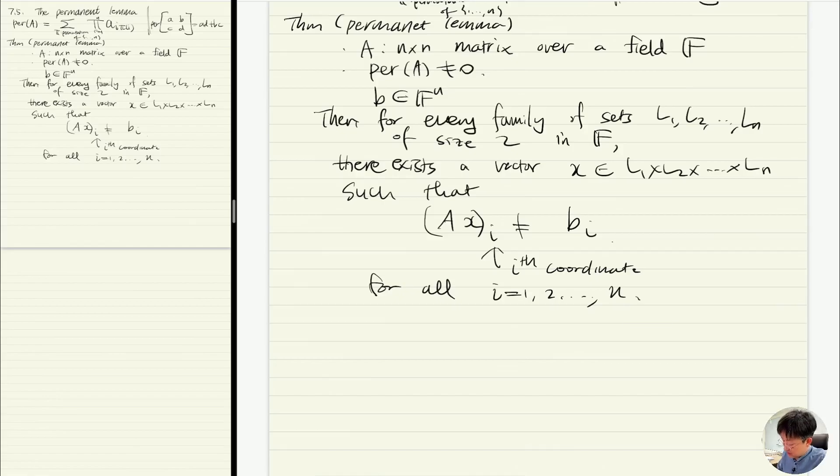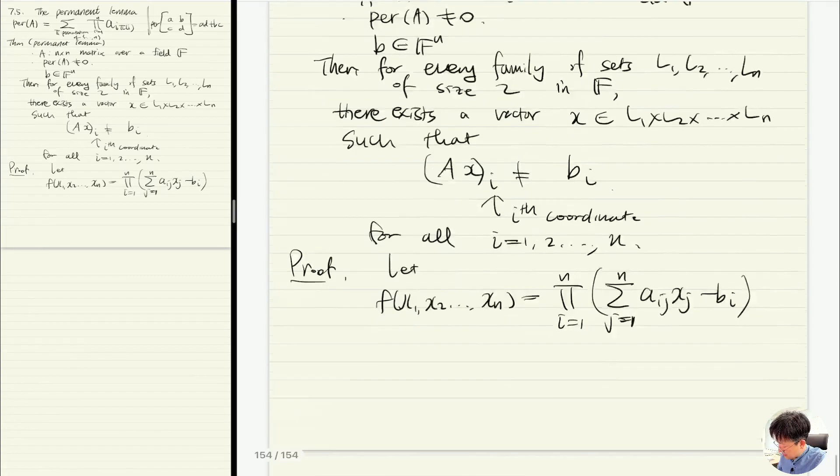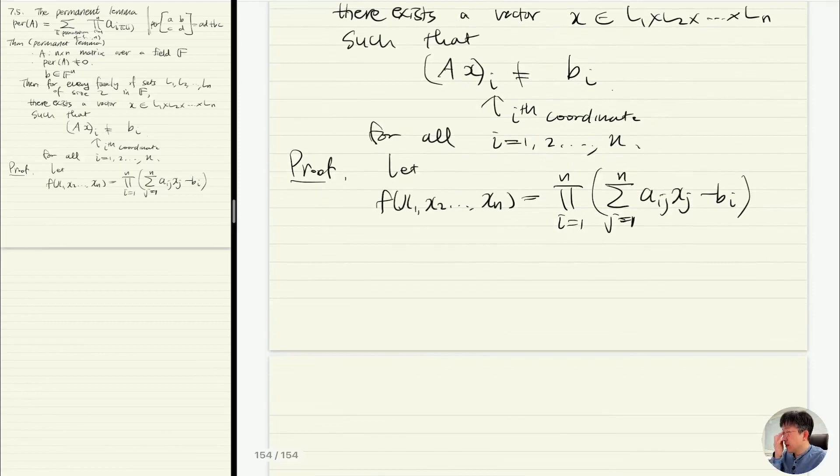And the proof is actually a simple application of the combinatorial nullstellensatz. Let's define f of x1, ..., xn to be the polynomial, the product of sum of a_ij x_j minus b_i. That's my polynomial. The degree of f is equal to n because we are multiplying linear polynomials n times.